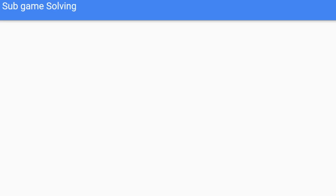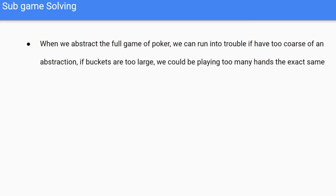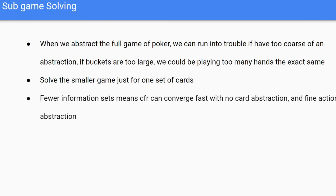Next we'll go over subgame solving. When we abstract the full game of poker, we can run into problems if we've abstracted it too coarsely — if buckets are too large, we could be playing many hands exactly the same. The idea is we solve a smaller version of the game with only one set of cards. Fewer information sets means CFR can converge on a very good strategy with no card abstraction and very fine action abstraction.